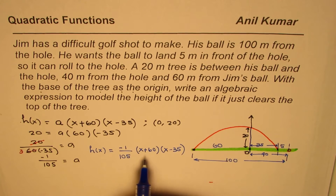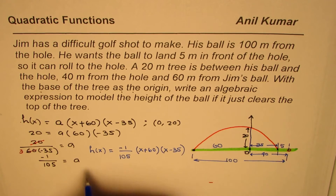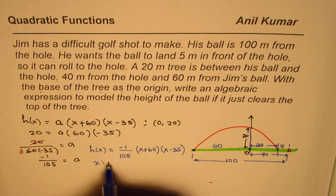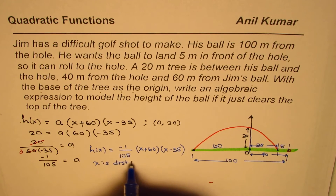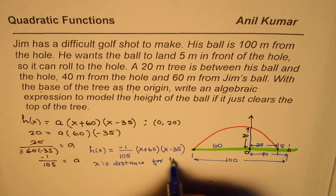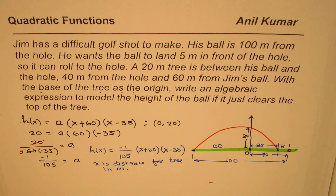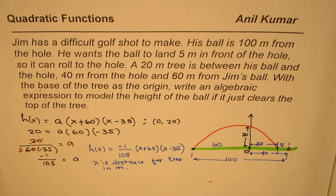So that is our answer: h(x) = -1/105 × (x + 60)(x - 35), where x is the distance from the tree in meters. That is how we find the formula for the ball's path. I hope that helps. I'm Anil Kumar — you can share and subscribe to my videos. Thank you and all the best.